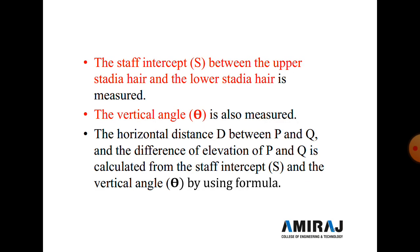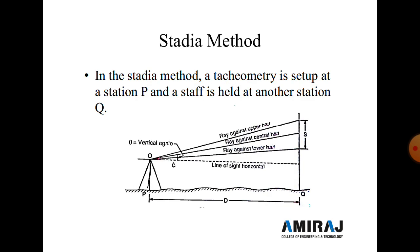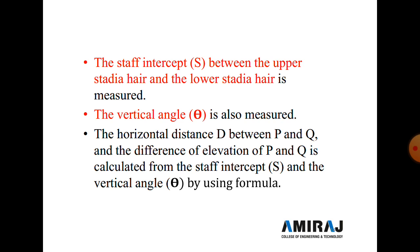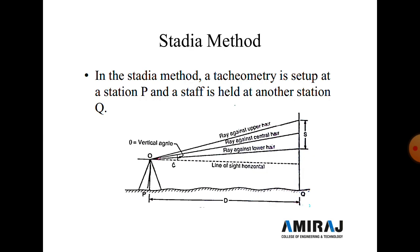The staff intercept is the difference between the upper stadia hair reading and the lower stadia hair reading. The vertical angle theta is measured with respect to the horizontal line of sight to the central hair reading. The horizontal distance D between instrument station P and staff station Q, and the difference of elevation, are calculated using the staff intercept and vertical angle theta by formula.